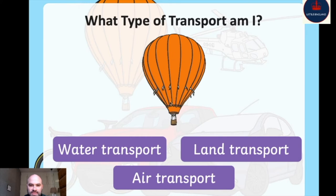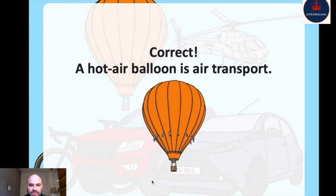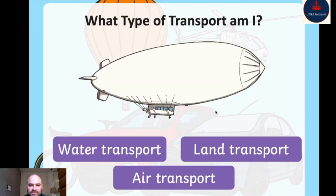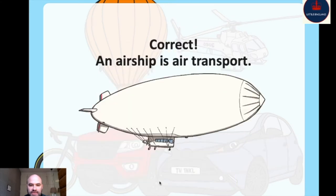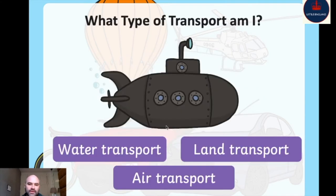What type of transport is this? This hot air balloon travels by air, so it is air transport. This airship also travels by air — not land, not water, but air transport. And this thing — do you know what this is called? This is a submarine. A submarine goes by water, so it is water transport.